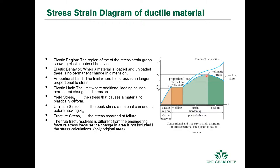The ultimate stress and yield stress are where failure is typically defined, depending on what's considered failure — permanent deformation or fracture. There's also a difference between true fracture stress, which accounts for the updated changing cross-sectional area, and engineering stress-strain, which does not account for that changing area during the test.